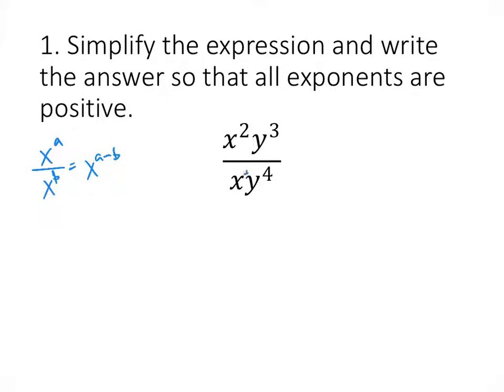So on the top we have x squared, and on the bottom we have x, which we can think of as x to the first, and so that means that we have x to the 2 minus 1, which is just x to the first.